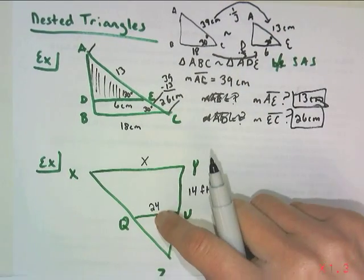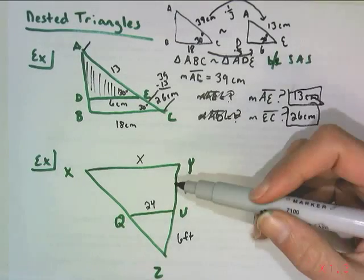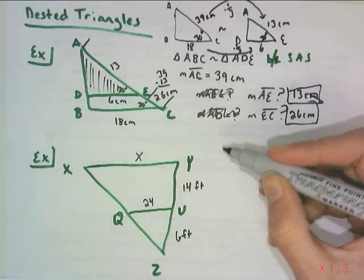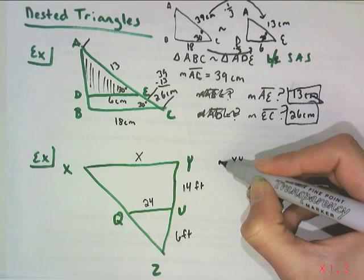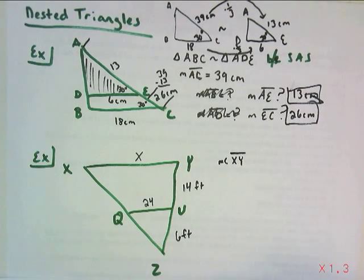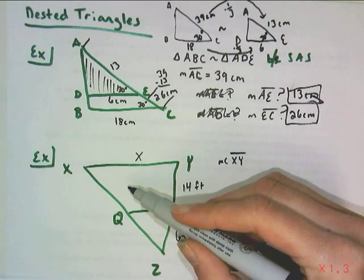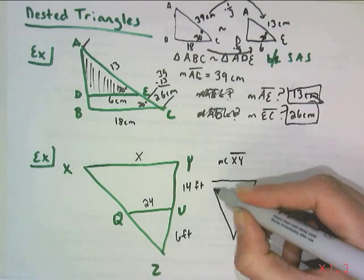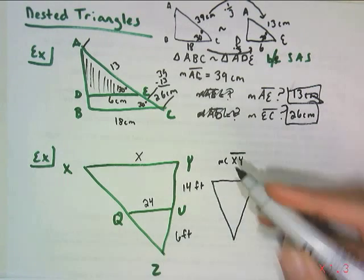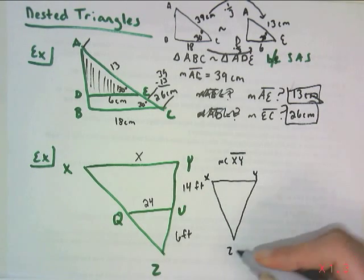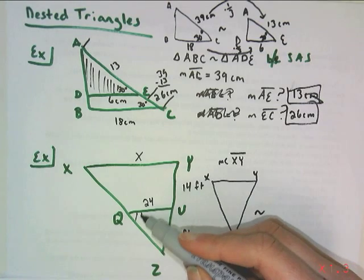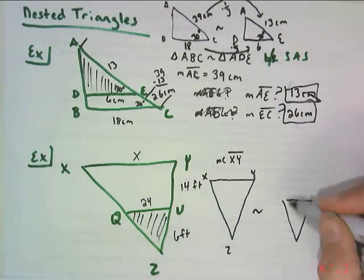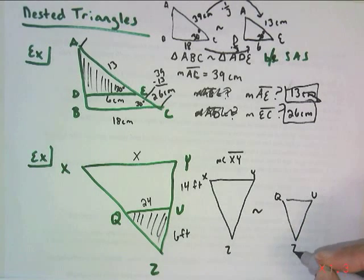Here's another one. We kind of rotated the triangle around. And you're asked to find what the length of XY is. So what is the measure of XY? If I were to un-nest these things, I have the large triangle, which we'll call XYZ. And then next to it, inside, we have the smaller triangle, which we'll call QUZ. And this is going to help us see how they're related.